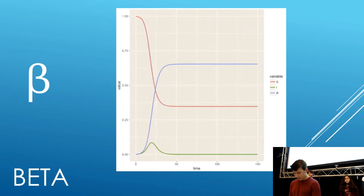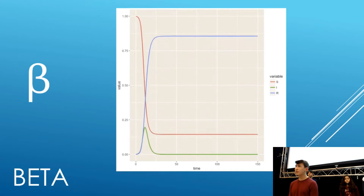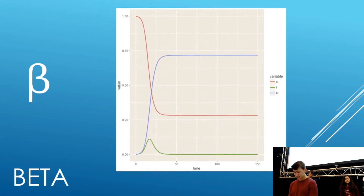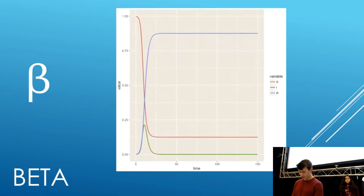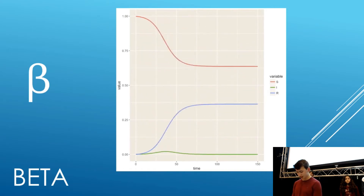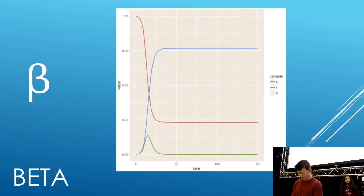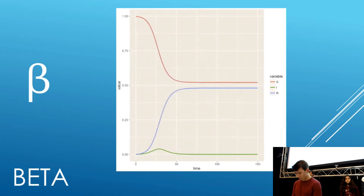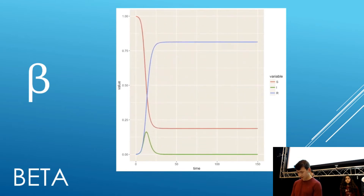As beta increases, more people will become infected earlier, so there is a sudden spike of infected people at the start. This also means the disease will die off quicker and more individuals recover.